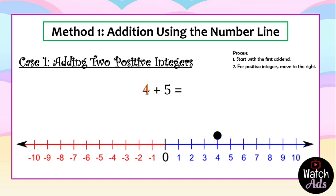Since five is positive, we move to the right. Five is our second addend, so we move five units to the right. We end up at nine. Write the final answer: nine.